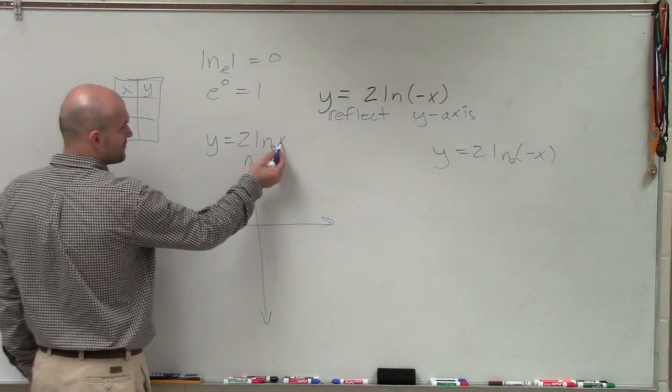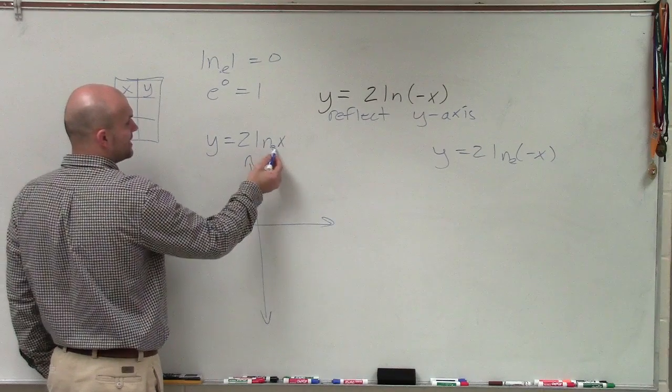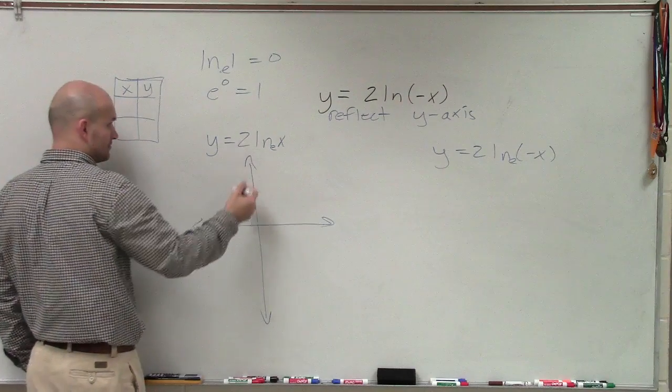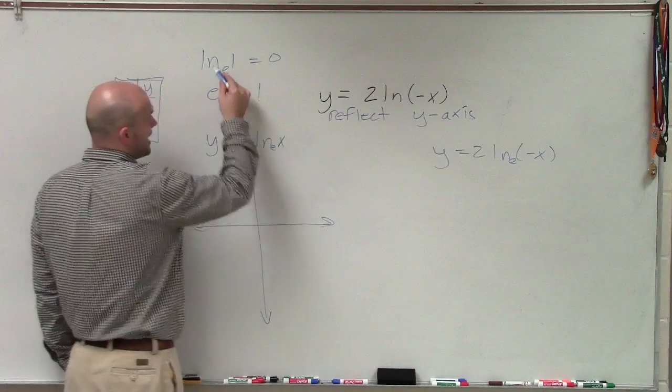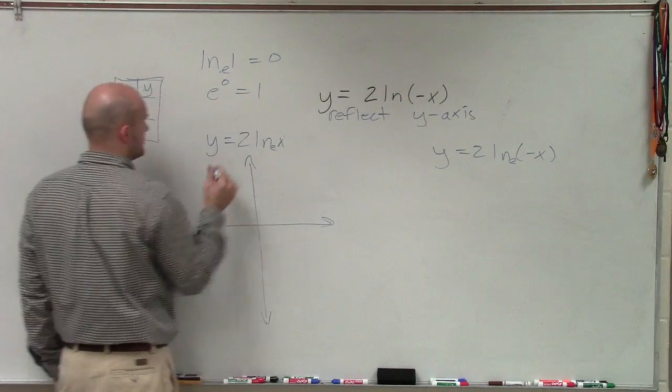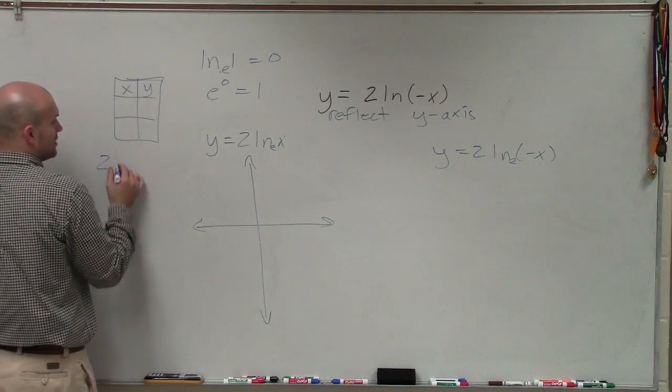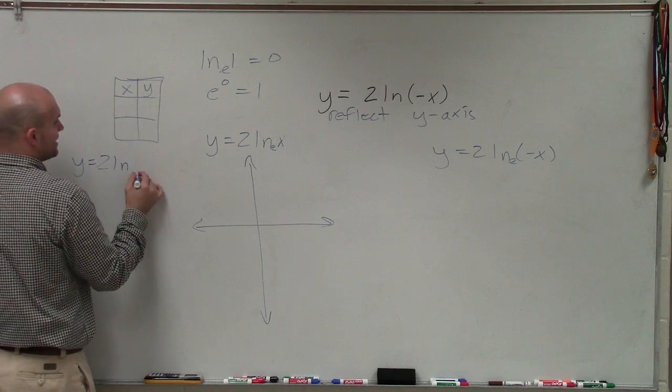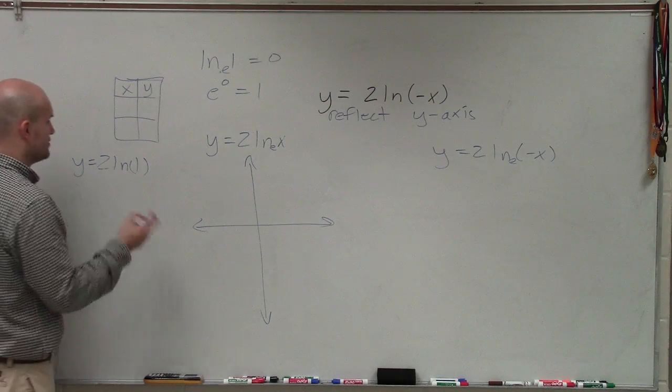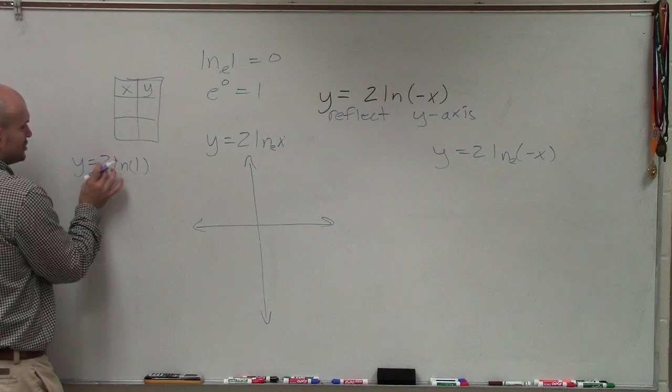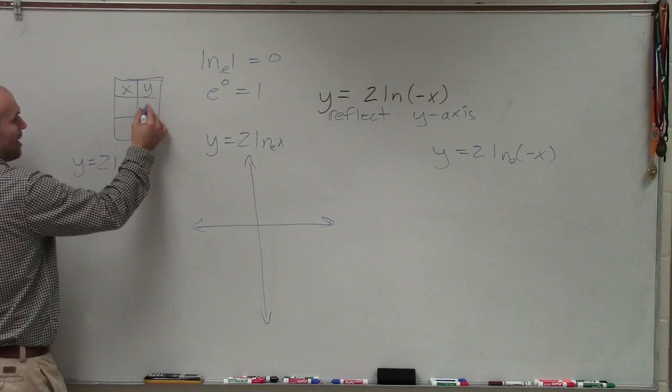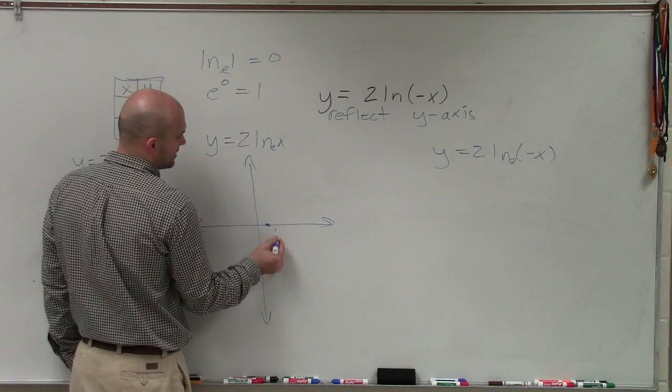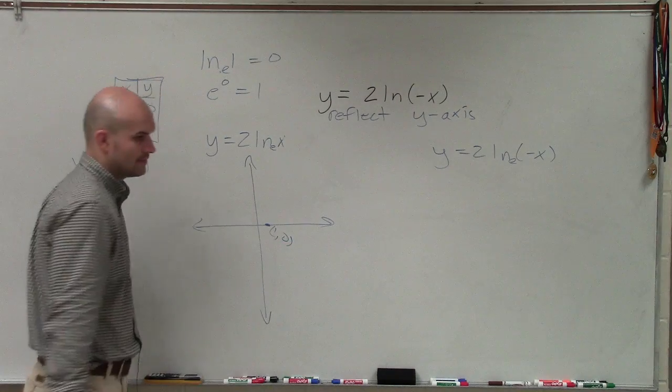OK. So if I put a 1 in for x, right, we know ln, e raised to what power gives you 1? Well, that's going to be 0. So therefore, ln base e of 1, so if I was going to do 2, so if I said y equals 2 times ln of 1, ln of 1 we know is 0. 0 times 2 is just going to be 0. So therefore, y equals 0 when x equals 1. Hence, given our x-intercept at 1 comma 0.